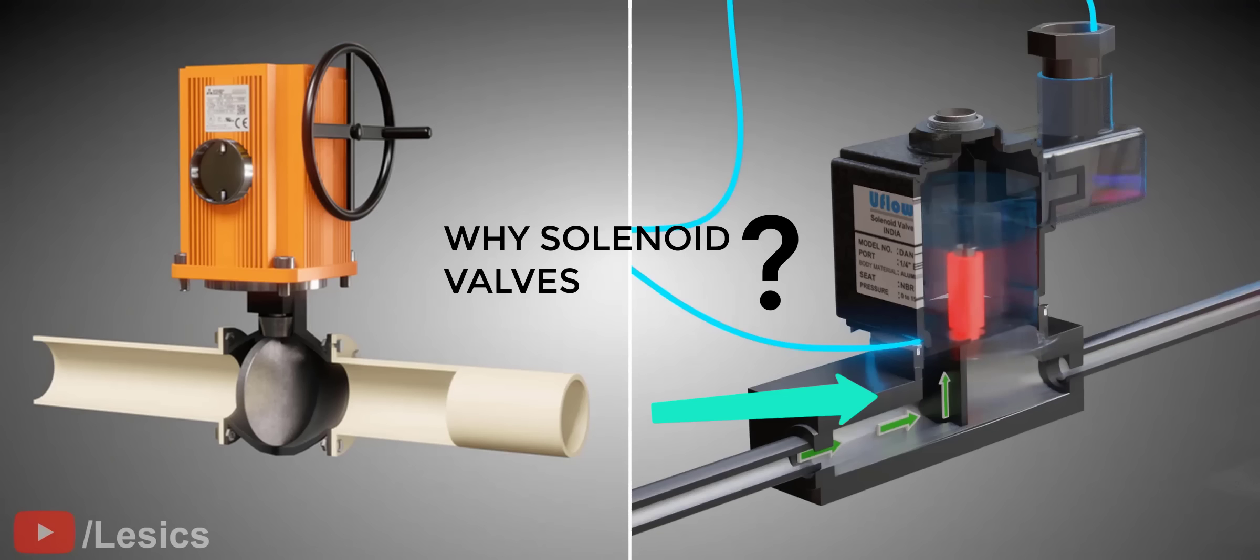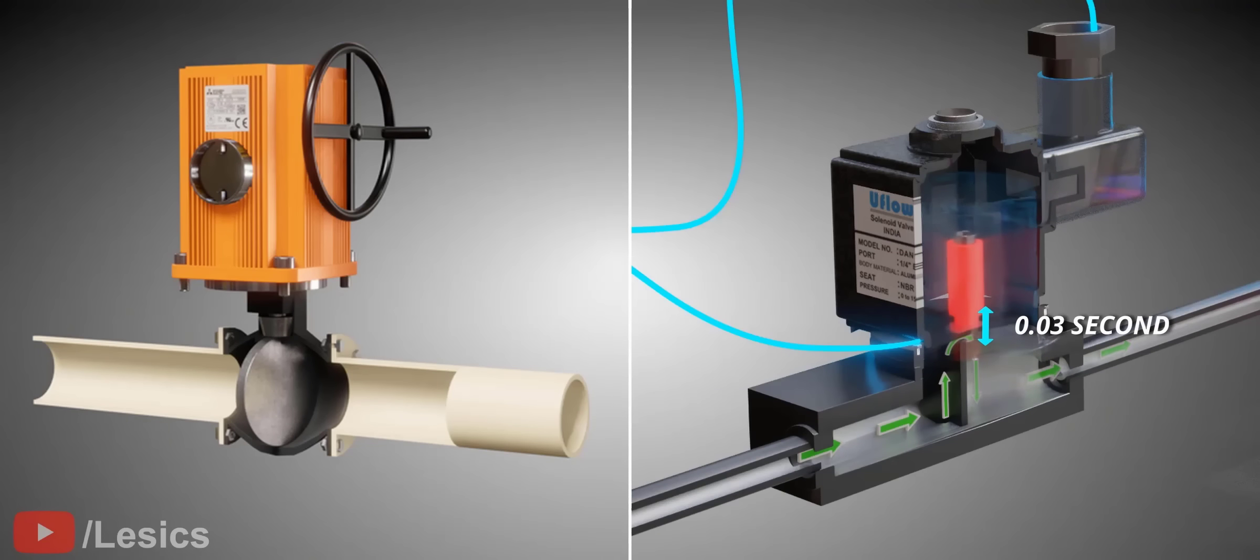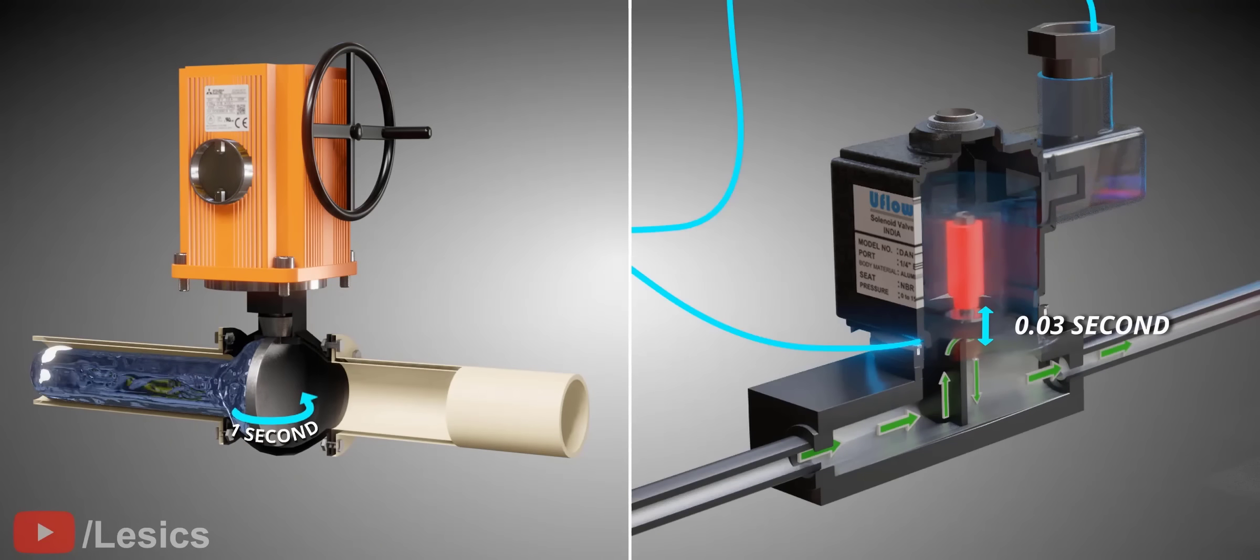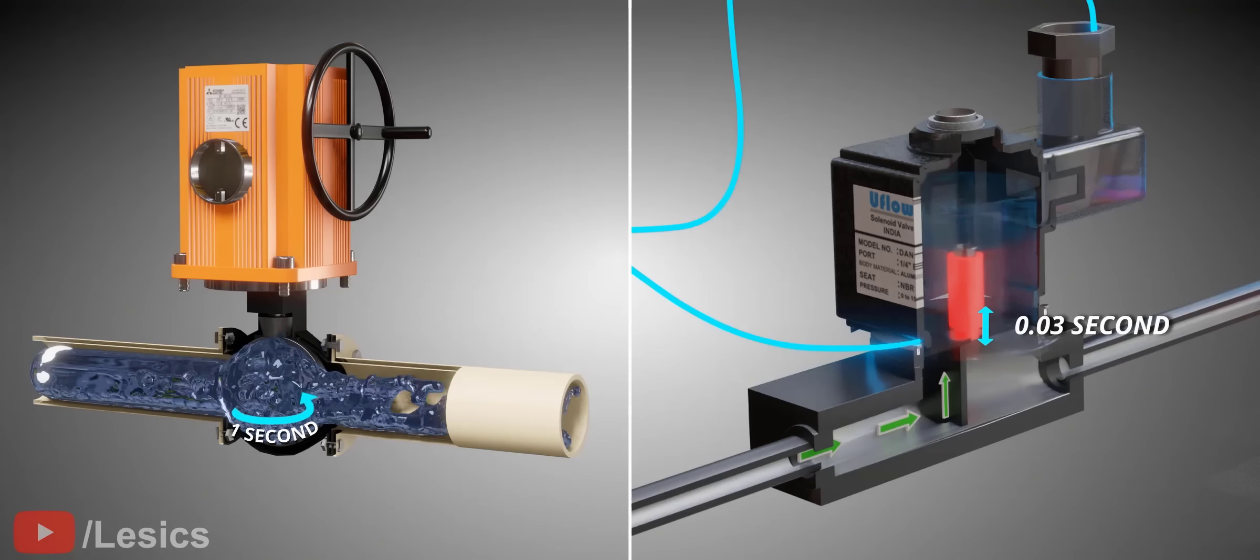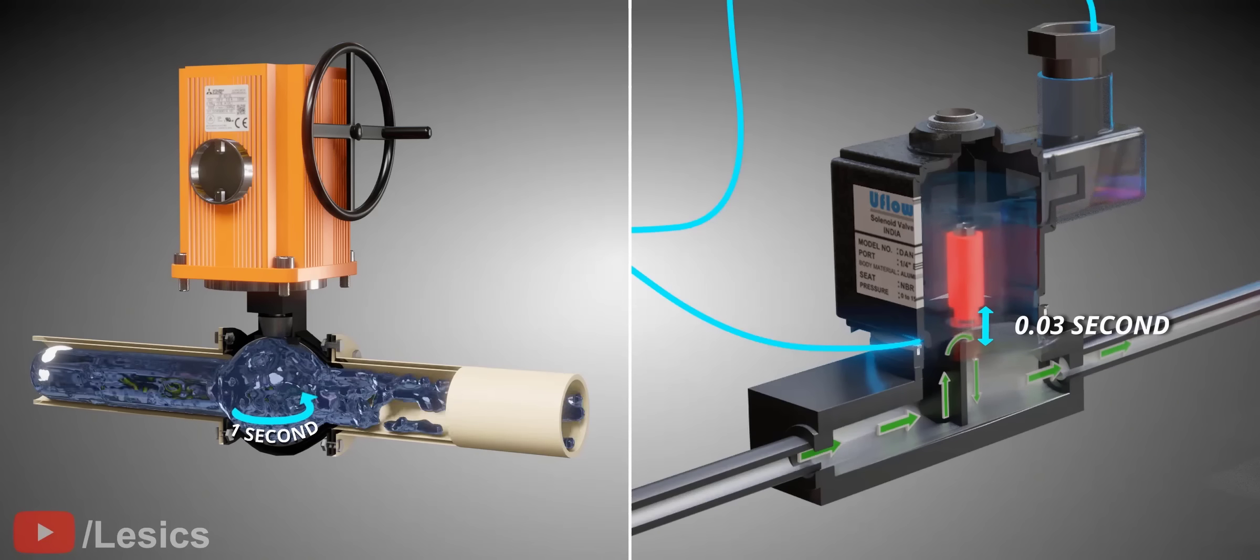The answer is that the solenoid valves are insanely fast. A normal motorized valve takes one second for its operation, while the solenoid valve finishes its task in 0.03 seconds.